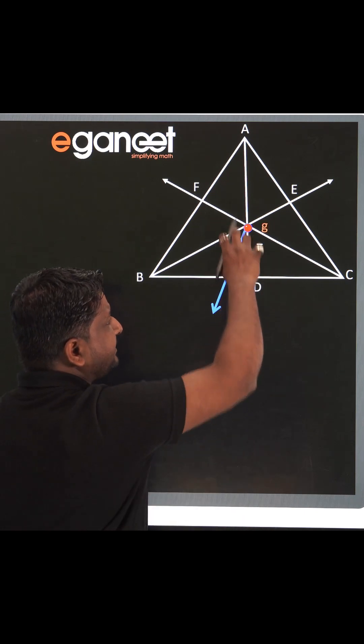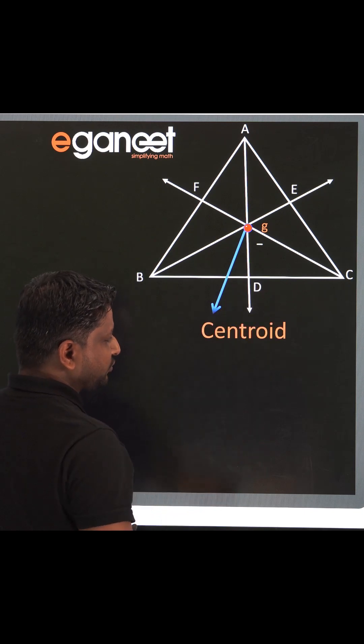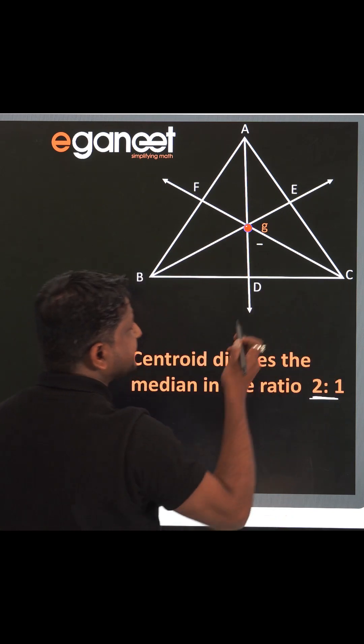Well, centroid of the triangle divides the median in the ratio 2 is to 1. What does that mean?